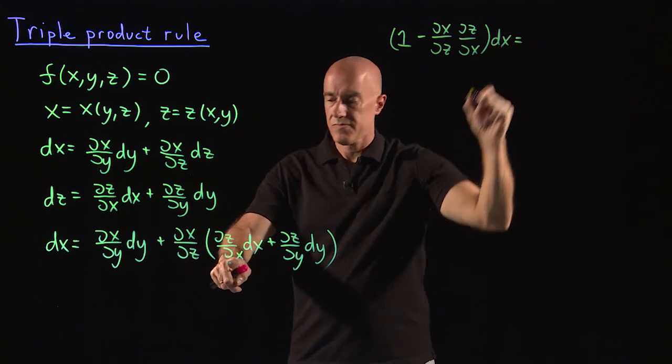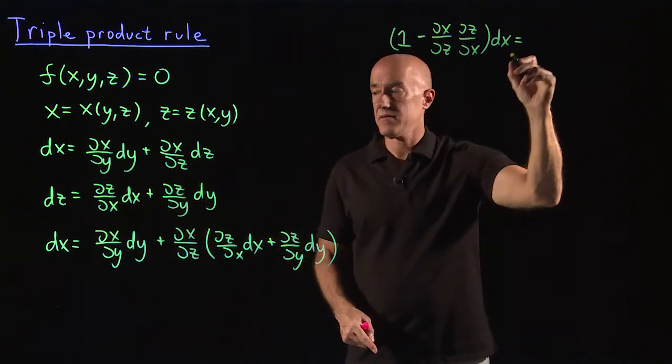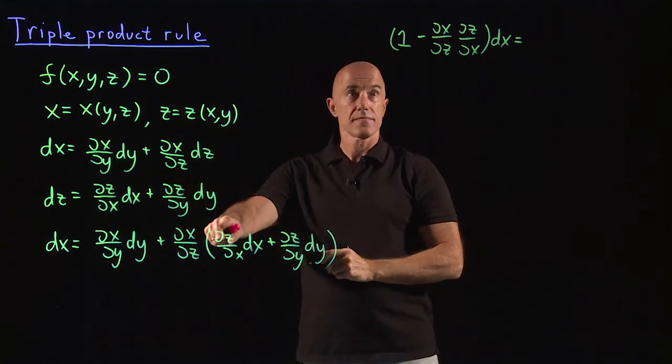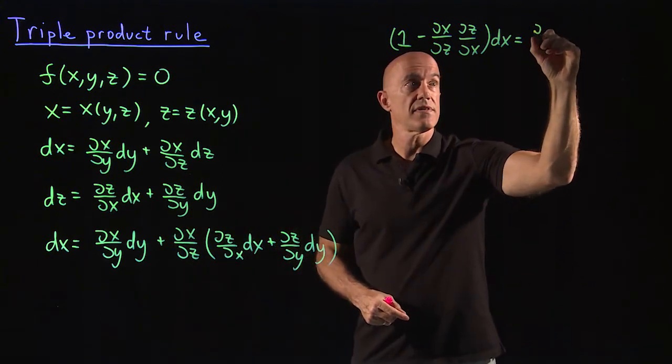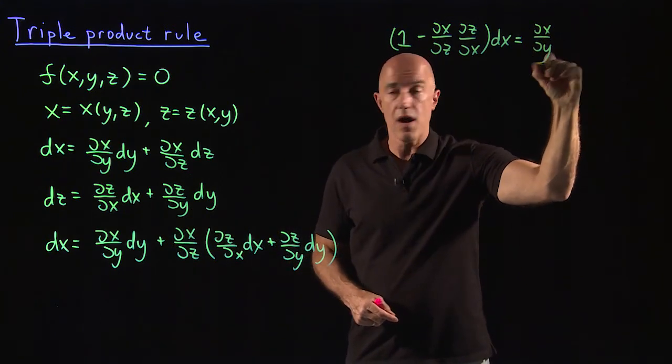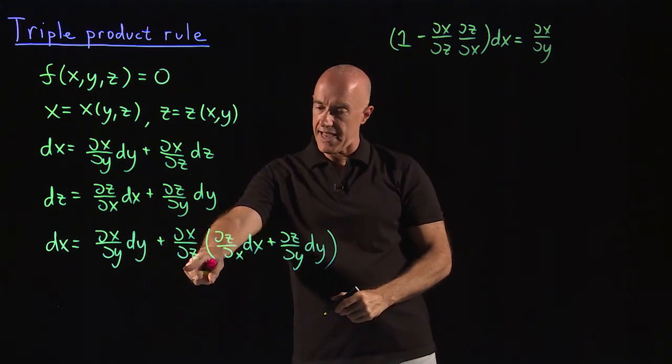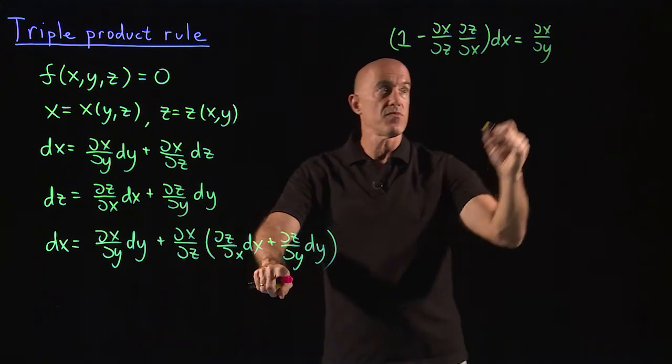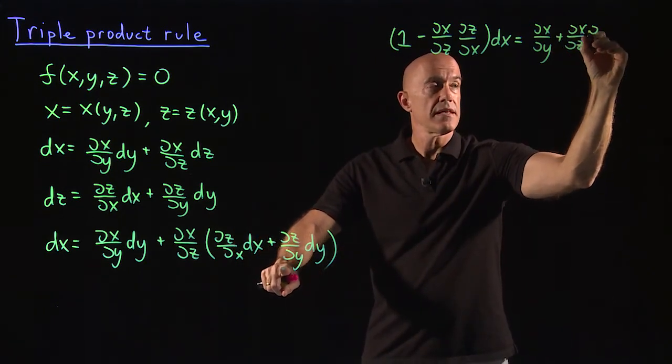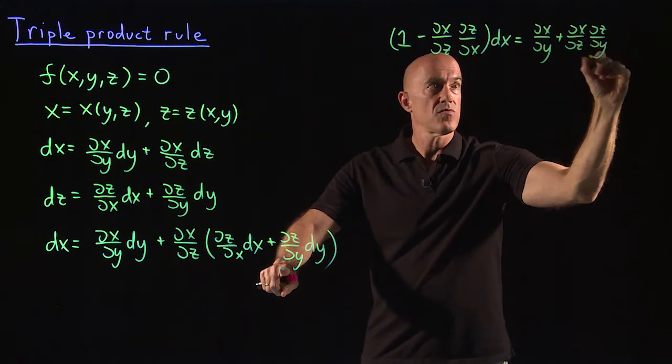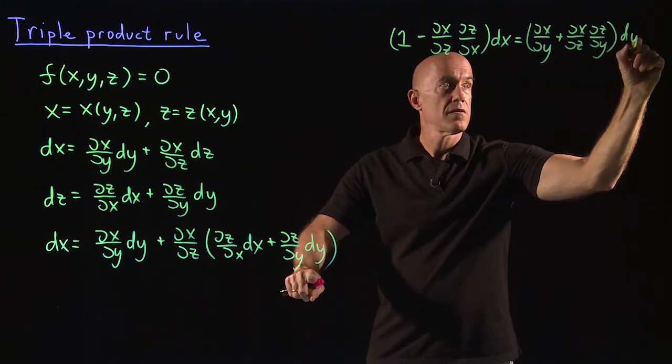And then we have the dy on the right. So we have dx dy, we put the dx on the left, the dy on the right, so we have dx dy here and then plus dx dz, dz dy, plus dx dz, dz dy, and that's multiply dy.